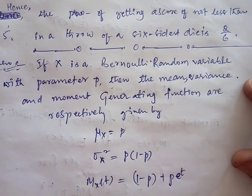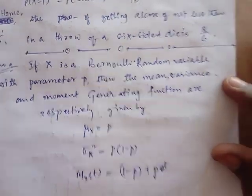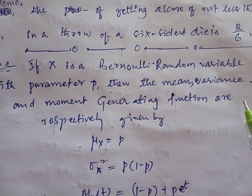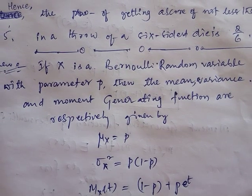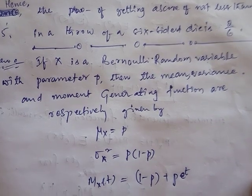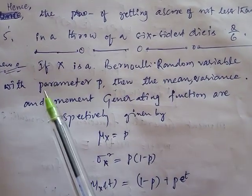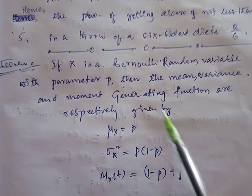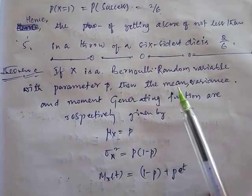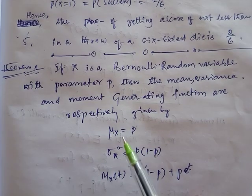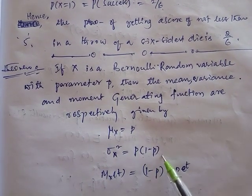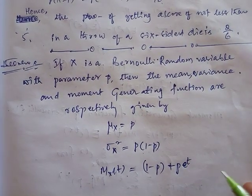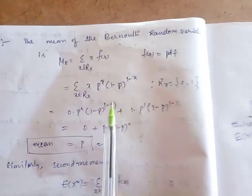Every valid probability density function has moments — mean, variance, second moment, third moment, fourth moment, and moment generating functions. If X is a Bernoulli random variable with parameter p, then the mean, variance, and moment generating function are respectively: μ_x = p, σ² = p(1−p), and M(t) = (1−p) + p·e^t.